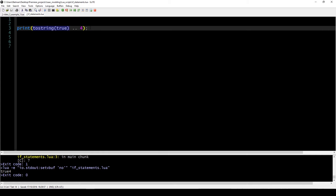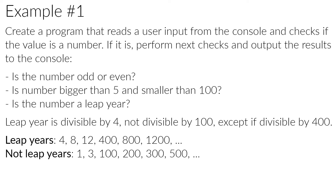Now we can go to our actual example to show how to use if-statements in a real-world scenario. Our first example: create a program that reads user input from the console and checks if the value is a number. If it is a number, perform the next three checks — if the number is even or odd, if the number is bigger than 5 and smaller than 100, and if the number is a leap year. A leap year is every number divisible by 4, but not divisible by 100, except if it is divisible by 400. So years 4, 8, 12, 400, 800, and 1200 are leap years, but years 100, 200, 300, and 500 are not.